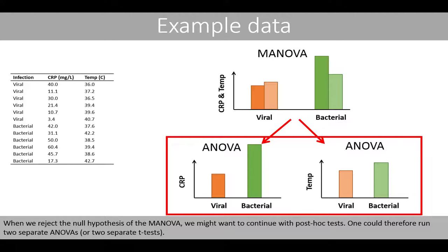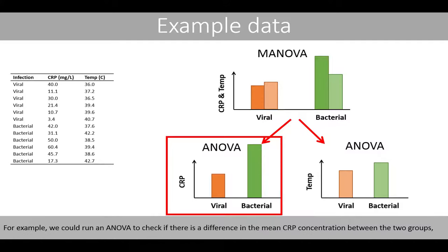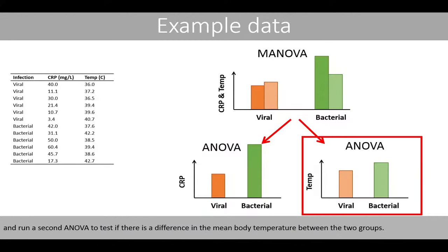When we reject the null hypothesis of the MANOVA, we might want to continue with a post-hoc test. One could therefore run two separate ANOVAs or two separate t-tests — for example, one ANOVA to check if there is a difference in the mean CRP concentration between the two groups, and a second ANOVA to test if there is a difference in the mean body temperature between the two groups.